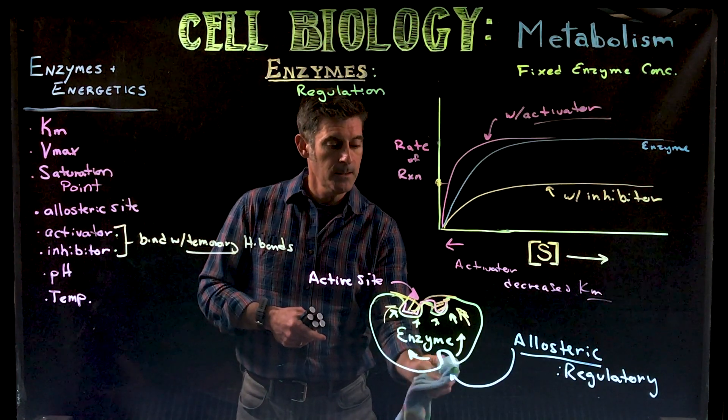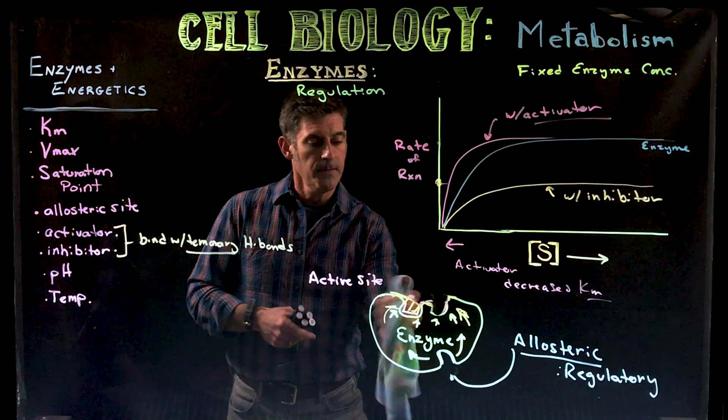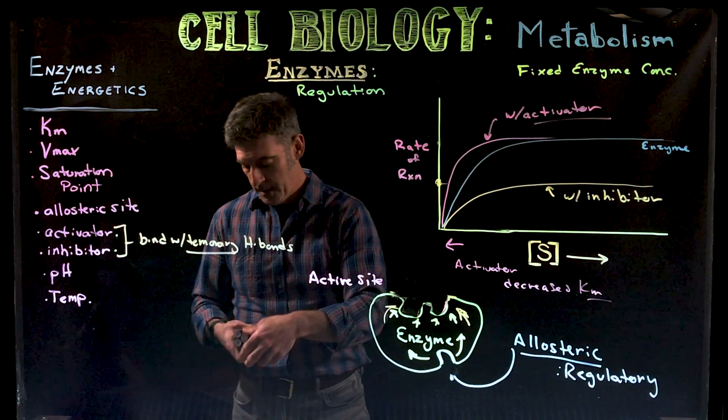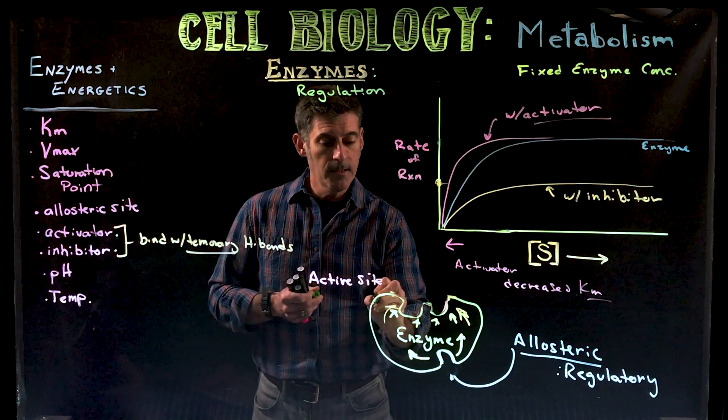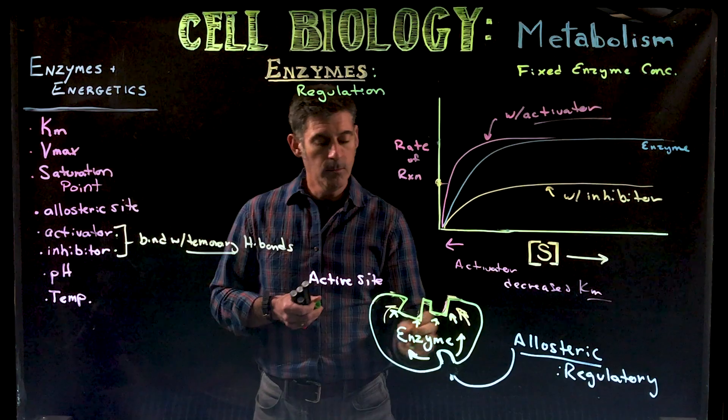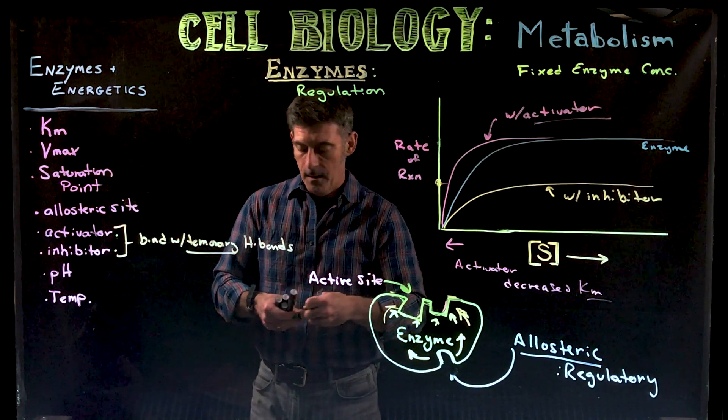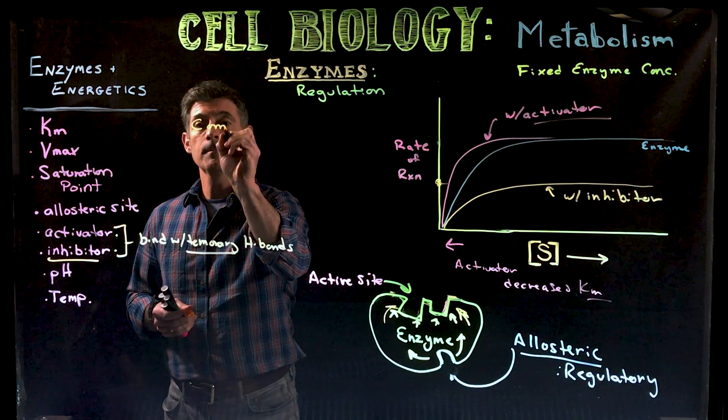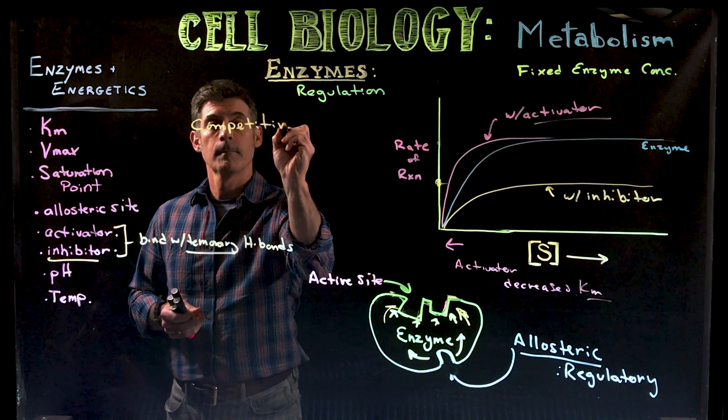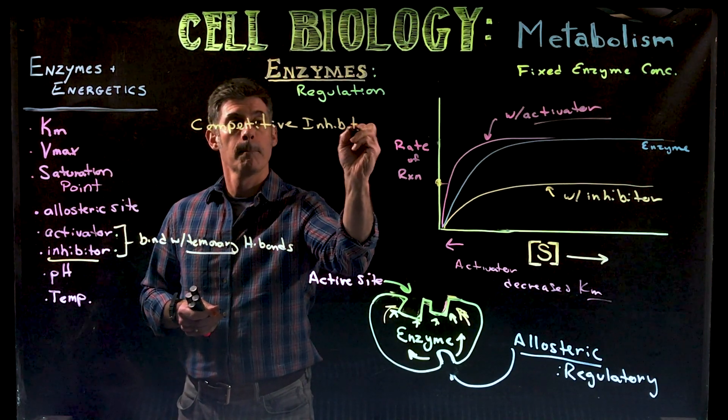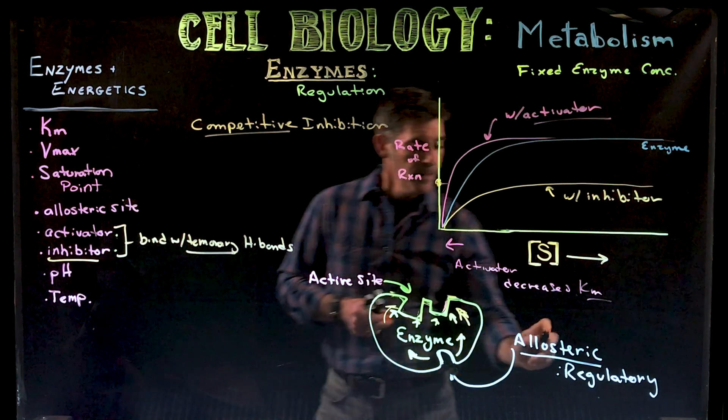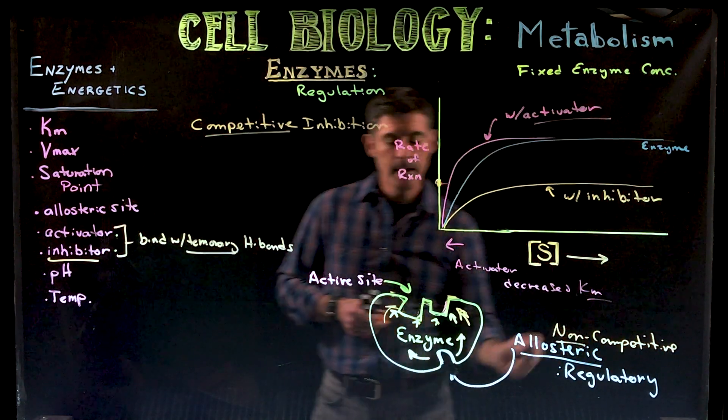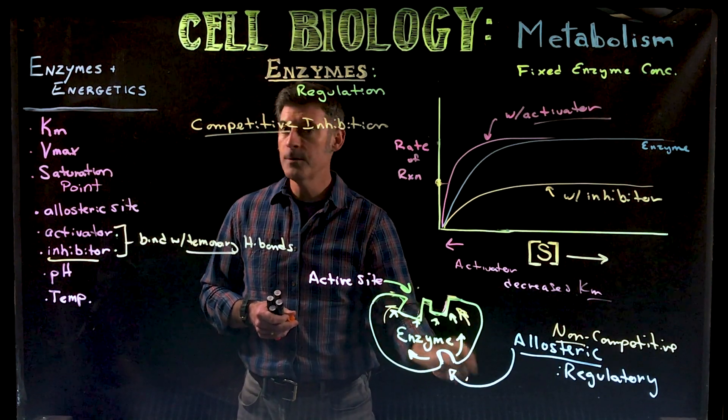Now coming back to this active site, we can also see another type. This is not for activation, this is inhibition only. We can also see something called competitive inhibition. Allosteric is what we consider non-competitive. It's non-competitive because it doesn't compete for the active site, it has its own separate binding site.